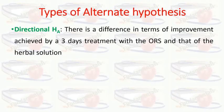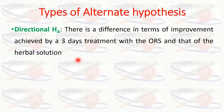The alternate hypothesis is also of two types: one is the directional alternate hypothesis and the other is the non-directional alternate hypothesis. The directional hypothesis is one in which the researcher is able to state the direction of the relationship between the populations.